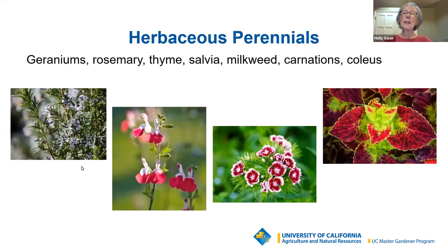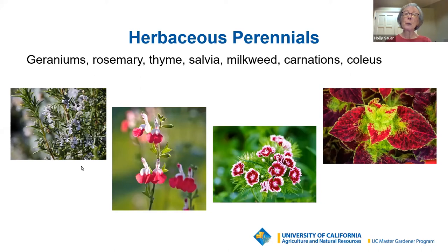Herbaceous perennials are some of the easiest plants to propagate. These are plants that die down to the ground each year but whose roots remain alive, sending up new top growth each year. These cuttings may root well in water as well as in a rooting medium. Cut the new growth any time during the growing season. Older woody stems tend to root more slowly or may not root at all. Rooting hormone may not be needed for herbaceous perennials during spring and summer. Examples include rosemary, salvia hot lips, dianthus, and coleus.